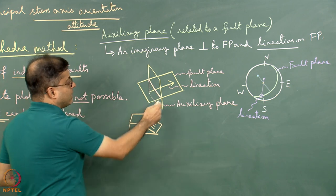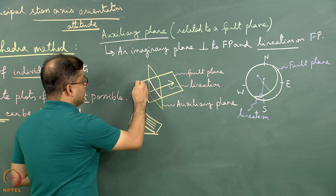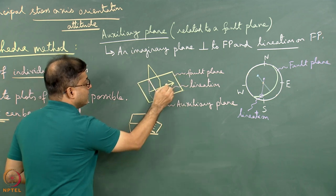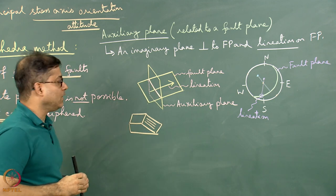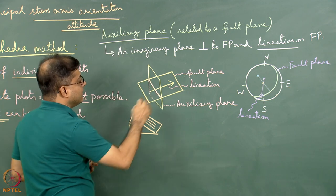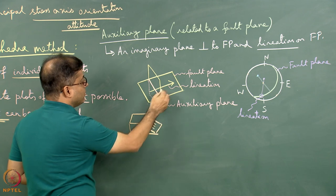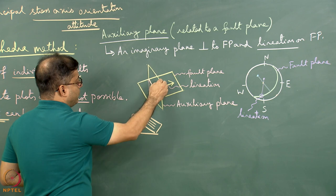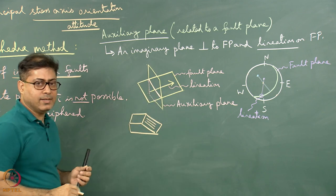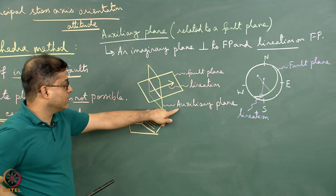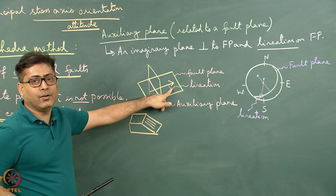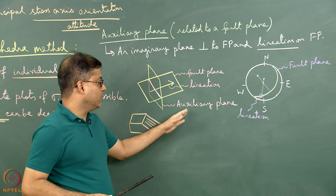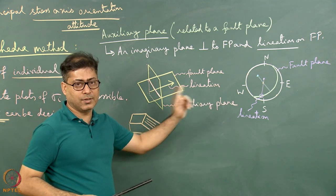Now consider a diagram: this is a fault plane and this line is a lineation on it. The auxiliary plane is perpendicular to the fault plane and also perpendicular to the lineation. The drawn parallelogram represents the auxiliary plane of the given fault plane. Now let us demonstrate how the auxiliary plane is plotted stereographically.